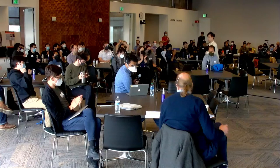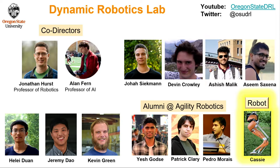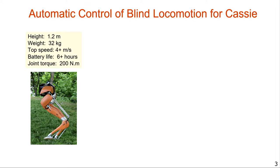Alan Fern from Oregon State. This was an ICRA 2021 paper with student first authors. I want to introduce our lab: the Dynamic Robotics Lab at Oregon State, co-directed by Jonathan Hurst and me, with collaborators from Agility Robotics. Our robot is Cassie — a bipedal robot running up to four meters per second. What we've been working on for the last several years is blind walking: we want Cassie to achieve the same reliable blind walking capability as humans.